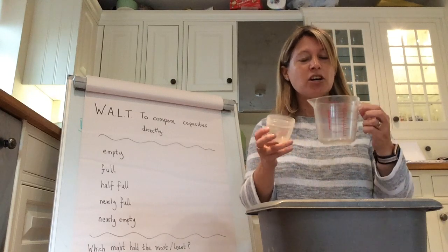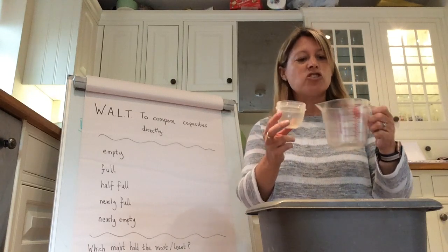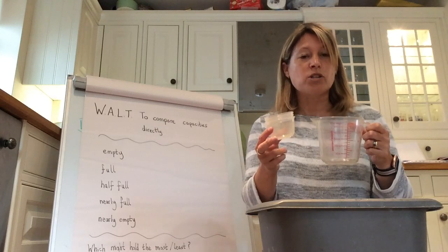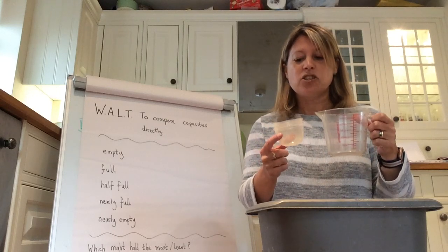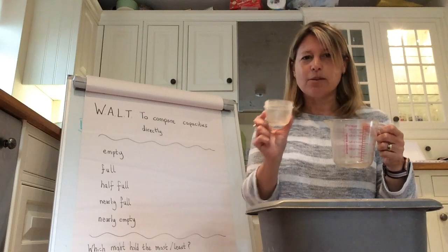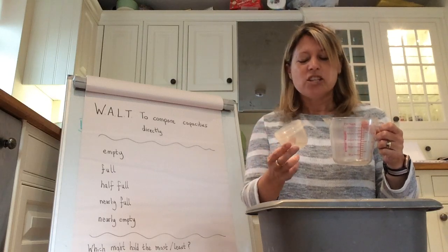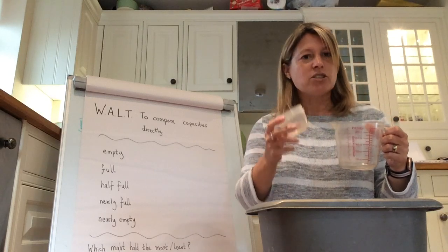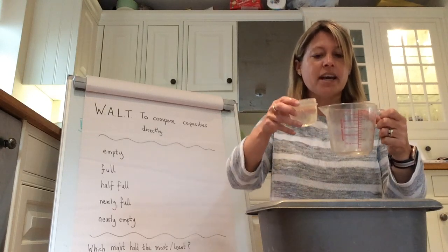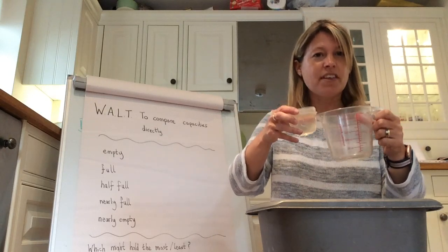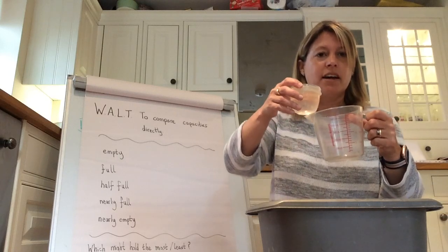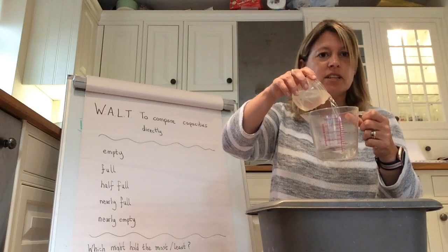The words are: empty, full, half full, nearly full, and nearly empty. I'm going to look at my two containers and try to guess which one will hold the most water and which one will hold the least. The one I think will hold the least is the little one — I think it's smaller. So I'm going to fill it up with water and test this by pouring it into the jug, which I think is the larger container with the greater capacity.